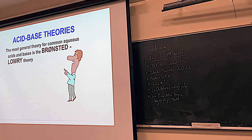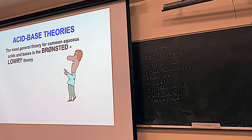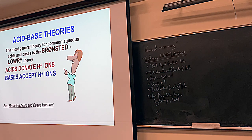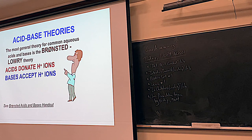There are several acid-base theories, and most of the time in this class we'll use the Bronsted-Lowry theory. It's really helpful to identify what an acid is and what a base is. In a nutshell: acids are species that donate H⁺, and bases are species that accept H⁺. The acids are going to get rid of an H⁺ and the bases will accept an H⁺. There's a handout about this, and we'll go through examples of how to identify a Bronsted acid and base.